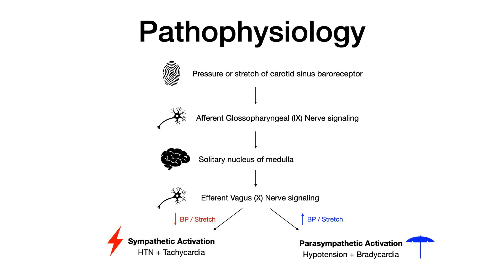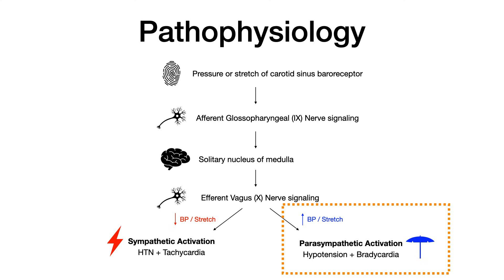For USMLE or COMLEX, what they're going to give you is a situation in which there is too much pressure applied at the carotid sinus, which causes cranial nerve 9 — glossopharyngeal — afferent signals going to the solitary nucleus, efferent vagus signals coming out, causing activation of the parasympathetic nervous system, lowering cardiac output, and causing hypotension and bradycardia.